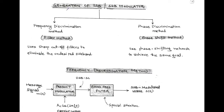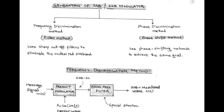Hello friends. Our next topic is generation of single sideband or SSB modulator. For the generation of SSB, we have two methods. The first method is called frequency discrimination method or filter method, and the second method is phase discrimination method or phase shift method.